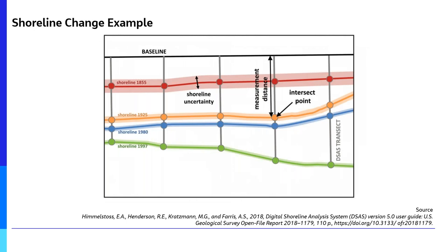Here's an example of how that looks. At the top we have our baseline in black and four historic shorelines in red, orange, blue, and green representing different years. This example shows what can happen in the real world where shorelines are receding — from 1855 to 1997 in this case. There's a shoreline uncertainty buffer which the tool factors in. The measurement distance from the baseline to the shoreline is calculated, along with intersect points where the transects and shorelines meet. The transects are perpendicular to the baseline, shown as green lines, and these are used to calculate the rate-of-change statistics.